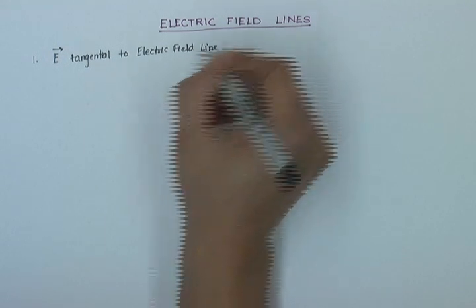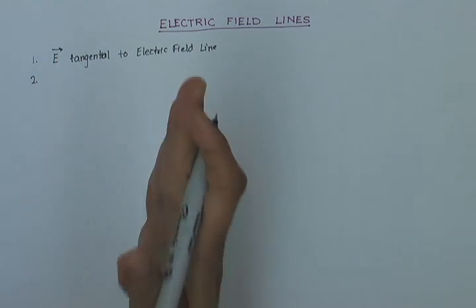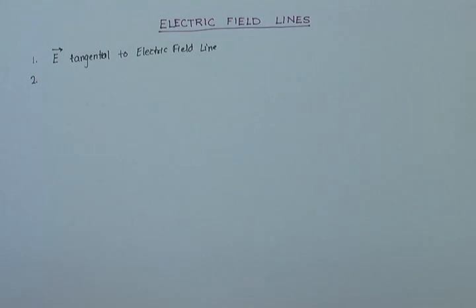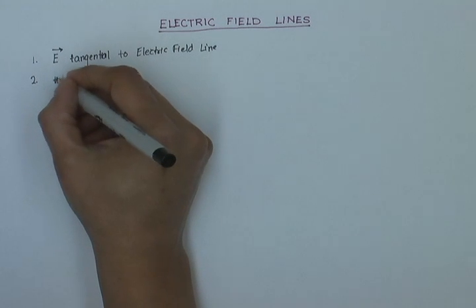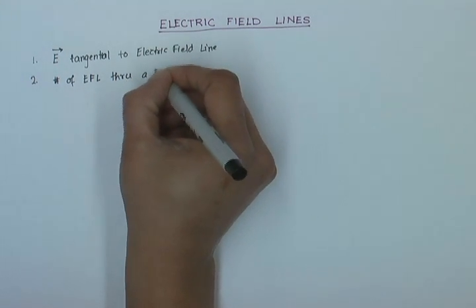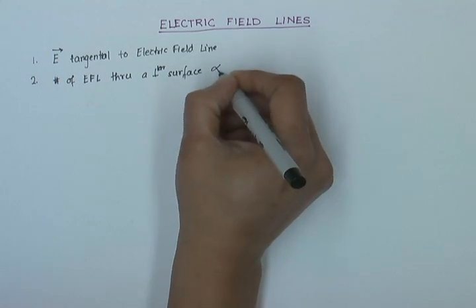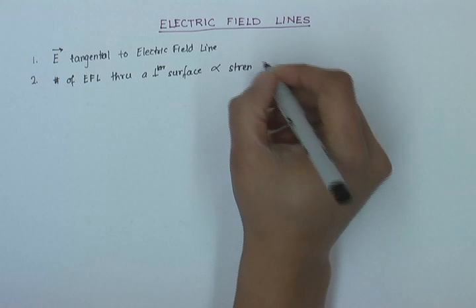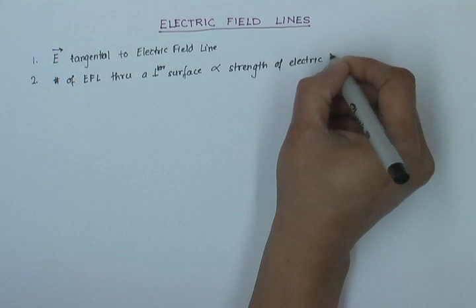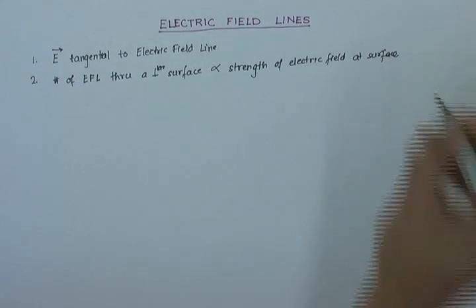The second rule is that if I have a number of electric field lines and a surface perpendicular to those electric field lines, then the number of lines through that surface must be proportional to the strength of the electric field at that surface.